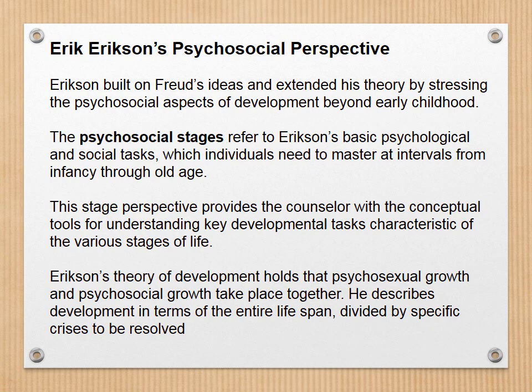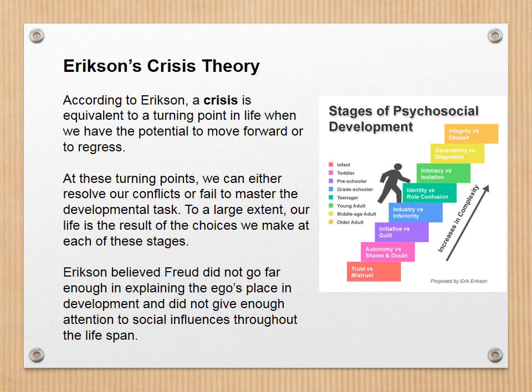Erikson's theory holds that psychosexual growth and psychosocial growth take place together. He describes development in terms of the entire lifespan, divided by specific crises to be resolved. According to Erikson, a crisis is equivalent to a turning point when we have the potential to move forward or to regress. At these turning points we can either resolve our conflicts or fail to master the developmental task. Our life is to a large extent the result of the choices we make at each of these stages. Erikson believed Freud did not go far enough in explaining the ego's place in development and did not give enough attention to social influences throughout the lifespan.